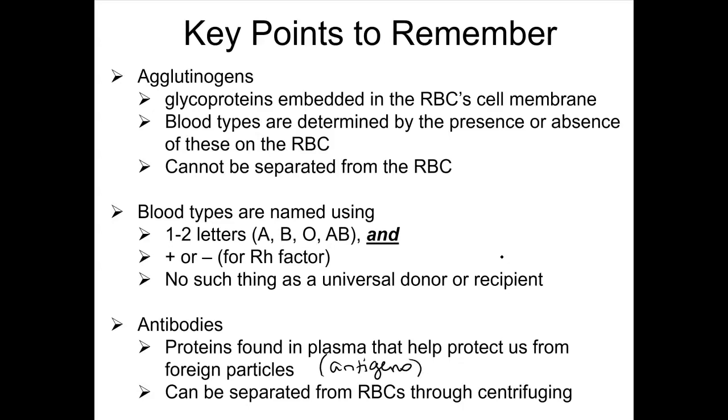So I try not to use the term antigen when we're talking about blood typing because I think it gets a little confusing. So I'm going to keep using the term agglutinogen. Antibodies when we're talking about blood typing in the pictures you'll see are often abbreviated as anti-A and anti-B and anti-Rh.